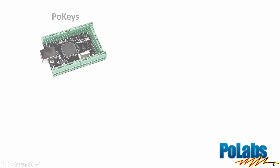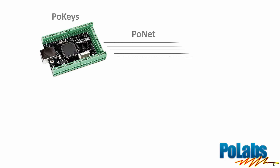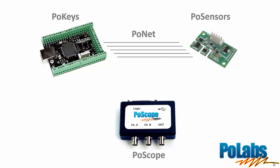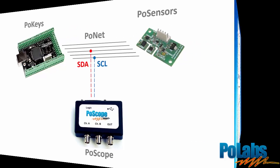To see how the I2C decoder works, you can use our POKEYS controller, connect it to the PO sensors board, and tap into the clock and data lines of the I2C bus. They can be connected to any pin of the MegaOne logic analyzer port.